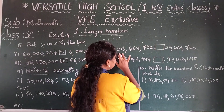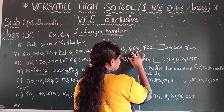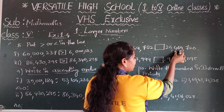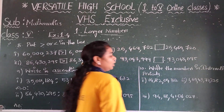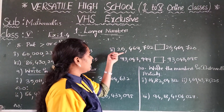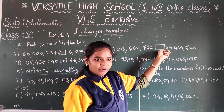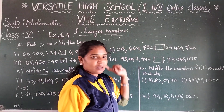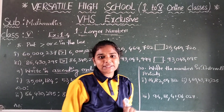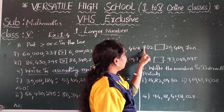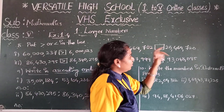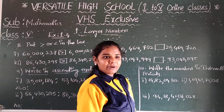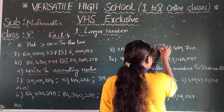Next pair: 25,469,702 and 25,469,720. Both have 25 millions and 469 thousands — same. Next digits: 702 versus 720. 720 is the greatest. So 25,469,702 is less than 25,469,720. Put the less than sign.